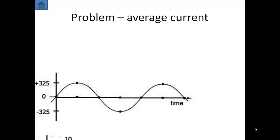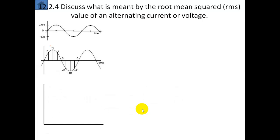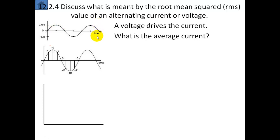First of all, we look at a problem about finding average current. With an AC circuit, the current is changing directions all the time. What is the average value for this current going to be? Sometimes it's going one way, sometimes it's going in the opposite direction. We know sometimes it's going to be positive, and an equal amount is going to be negative. When we add up all the values of the positive and the negative, we end up with zero. So the average current is going to be zero, because half the time it's going to be positive, half the time it's negative.